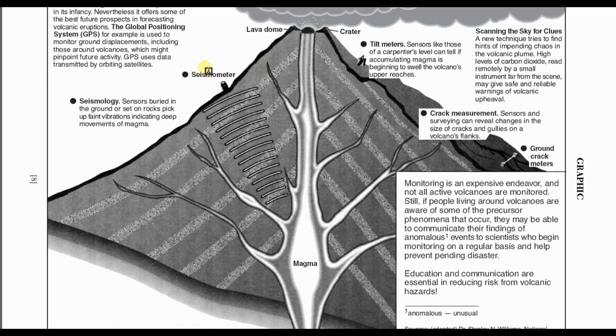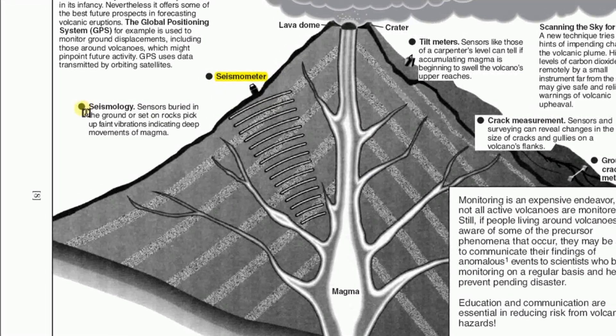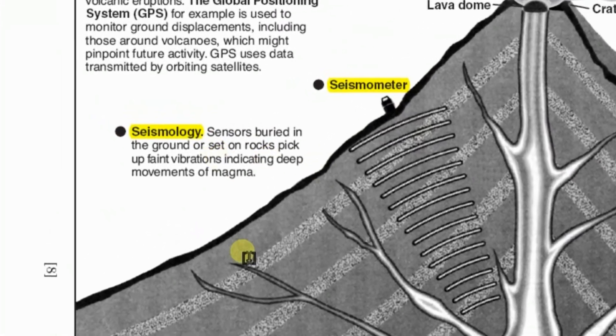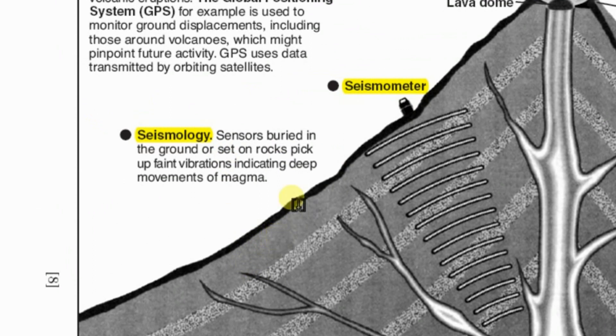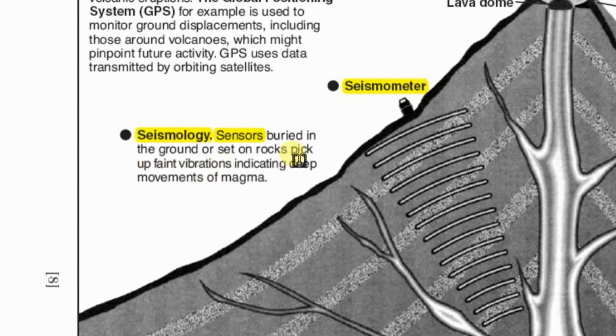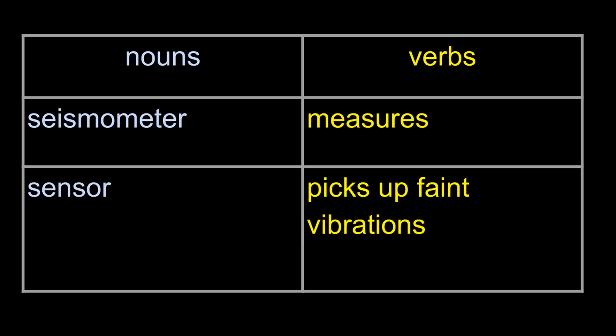I don't really understand what I'm looking at, but the definition tells me a seismometer is a kind of sensor. I know it's a noun — a thing. As I read the definition, I see it's a thing that picks up faint vibrations. I still don't know all of this exactly, but as I compare these terms, I start to make a pretty strong inference. An inference is an educated guess. I can say: a seismometer is a kind of sensor that measures faint vibrations. I'm going to use this statement as my guess for the answer.